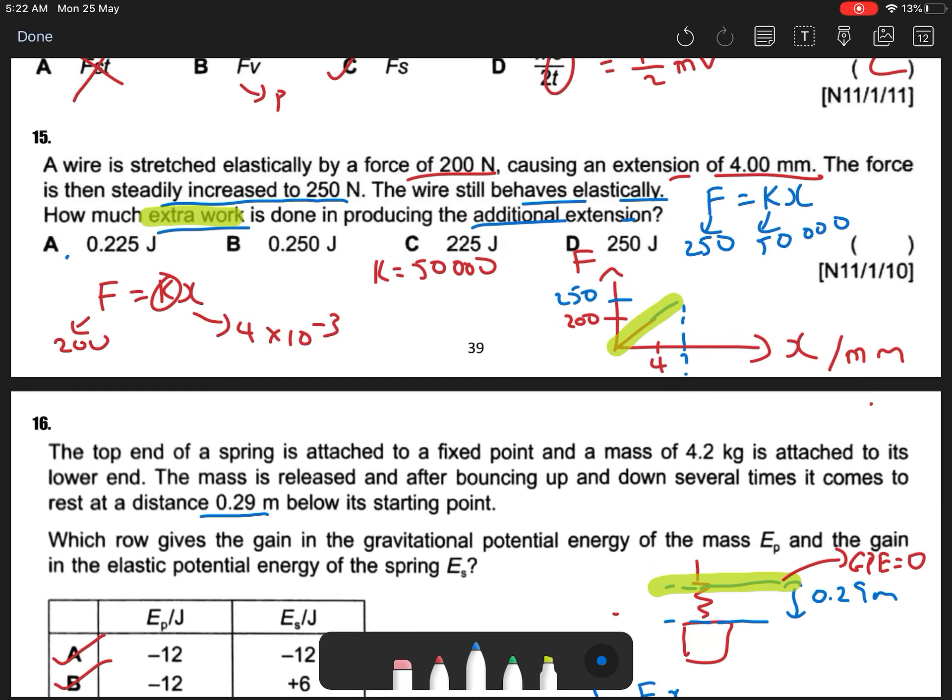So x is my extension. 250 divided by 50,000, which will give me 0.005, or 5mm. So my 250 is 0.005, or 5mm. So this extension is my total extension, is from 0 to 0.